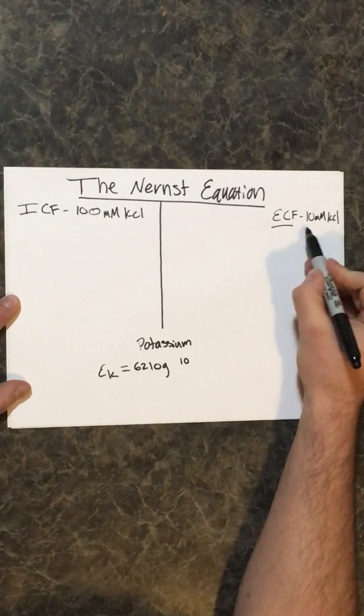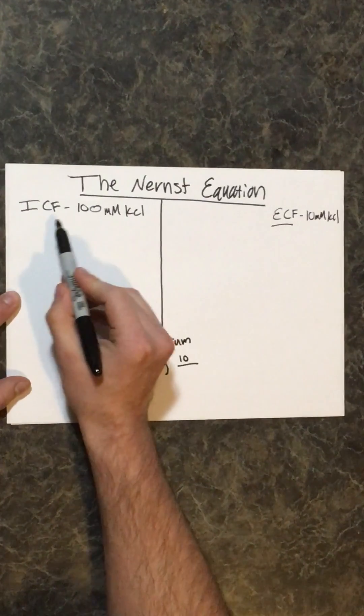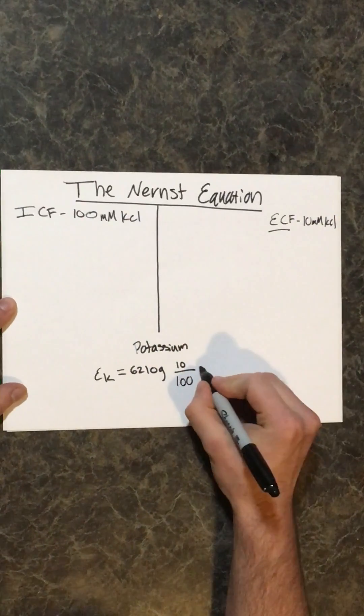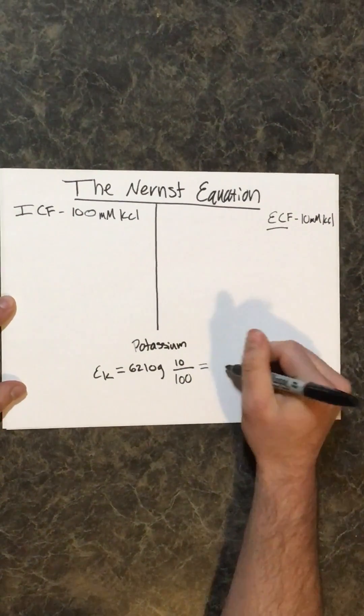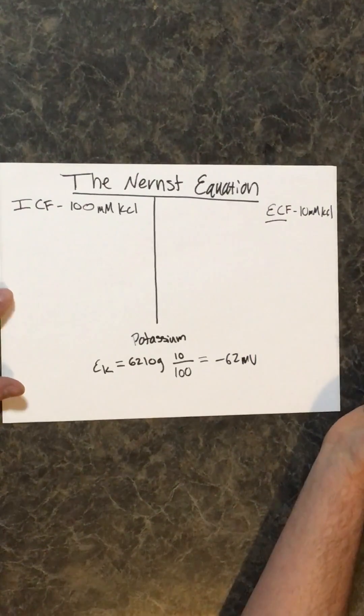So 10 millimolar of KCl over the concentration of the intracellular fluid, in this case 100 millimolar, and you should get an answer after you plug and chug of negative 62 millivolts. This is the equilibrium potential of potassium.